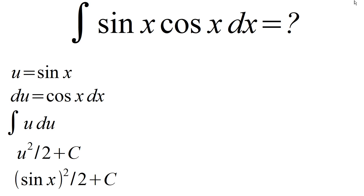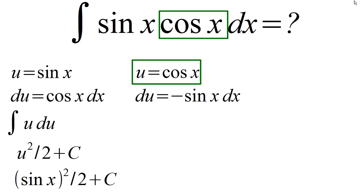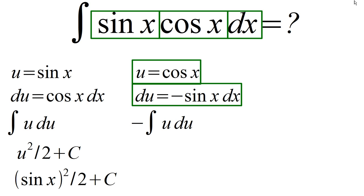But that's not the only way we could solve this problem. We could have also done a u-substitution where u equals cosine x. In that case du would equal negative sine x and we end up with the integral of negative u du. Simplifying this answer, we end up with the result of negative cosine squared divided by two plus an arbitrary constant.